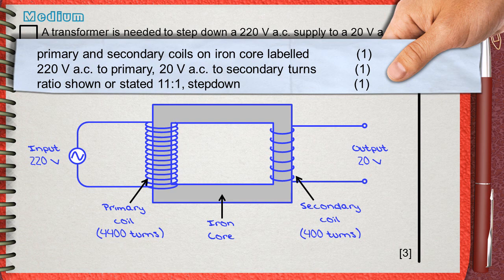Showing a suitable ratio, which is in our case 11 to 1, to indicate that this is a step down transformer, this is the third mark.